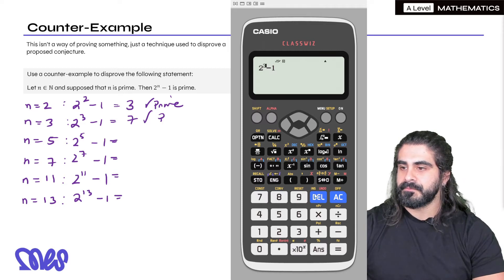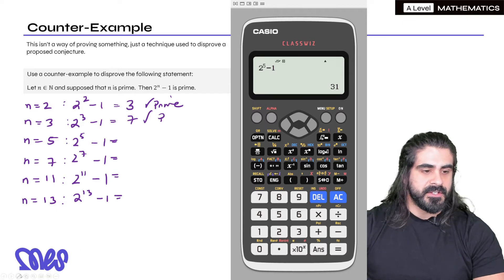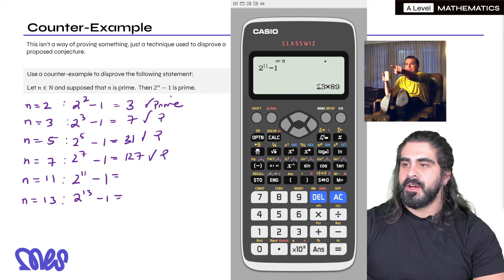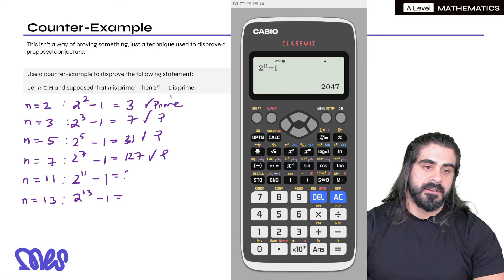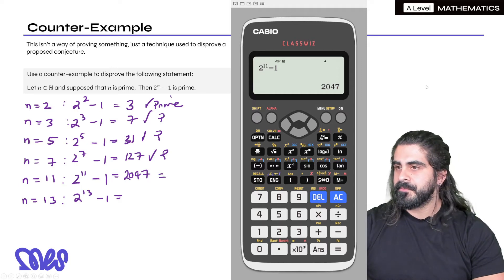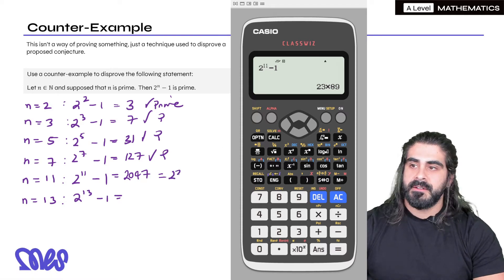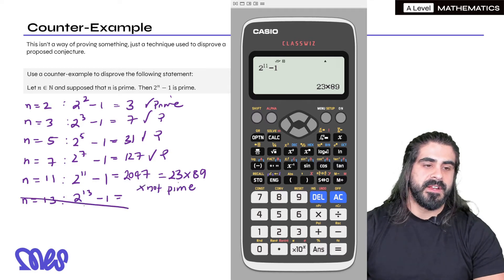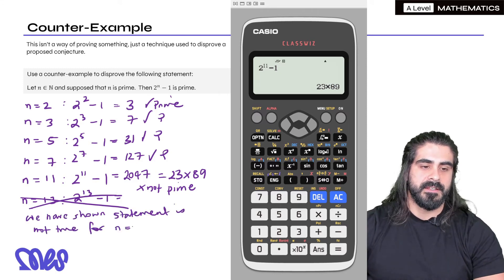What about if we change it to power 5? 31, shift fact, doesn't change. And I'm going to keep going. Shift fact. Ah, 2 to the power of 11 changes. So this is not prime. What was it? Do shift fact again. So 2047, which is 23 times 89. So this is, we're going to say not prime. So we didn't even have to do n to power 13. So we have shown statement is not true for n equals 11.